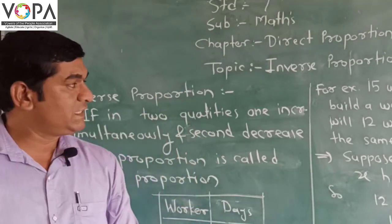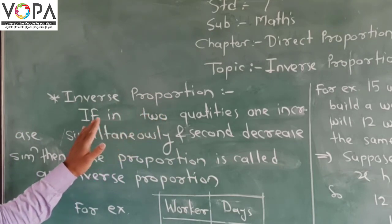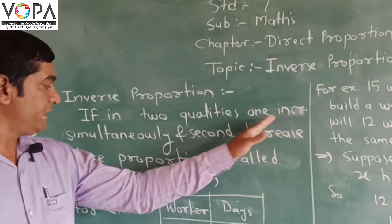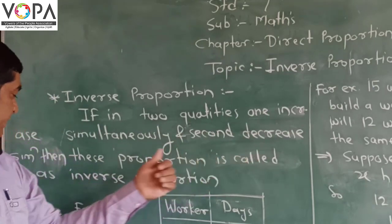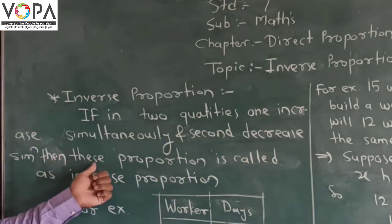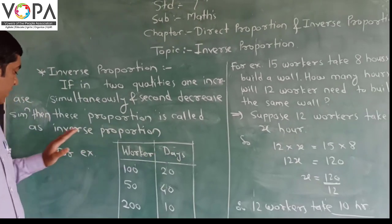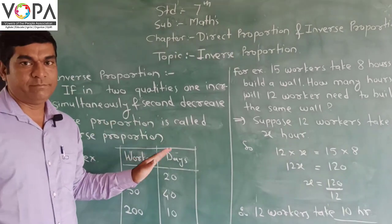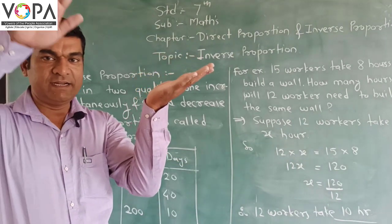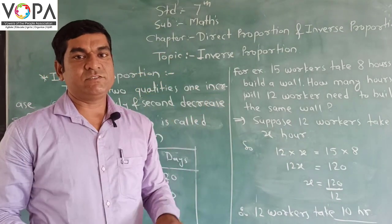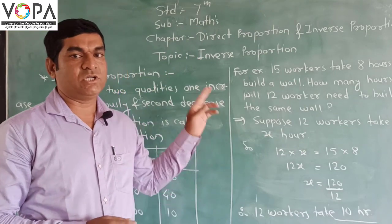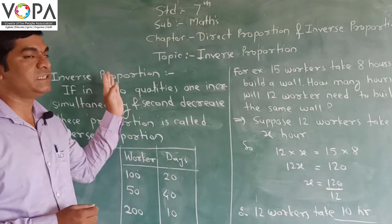Simply, the definition is: if in two quantities one increases simultaneously and the second decreases simultaneously, then this proportion is called Inverse Proportion. One quantity increases and the second decreases. We call this Inverse Variation.